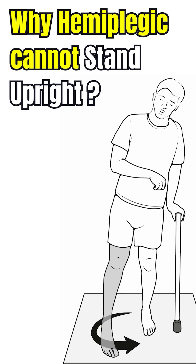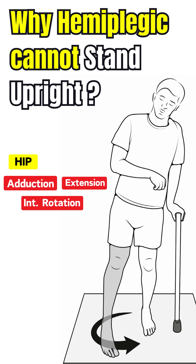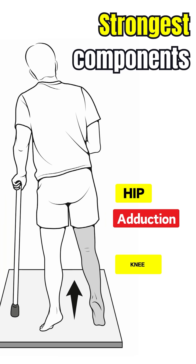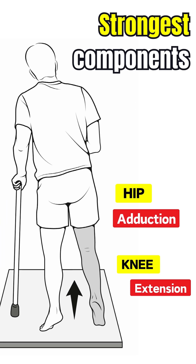Let's discuss the important components of the lower limb extensor synergy, which are hip extension, adduction, and internal rotation, with knee extension, ankle plantar flexion, inversion, and toe flexion.